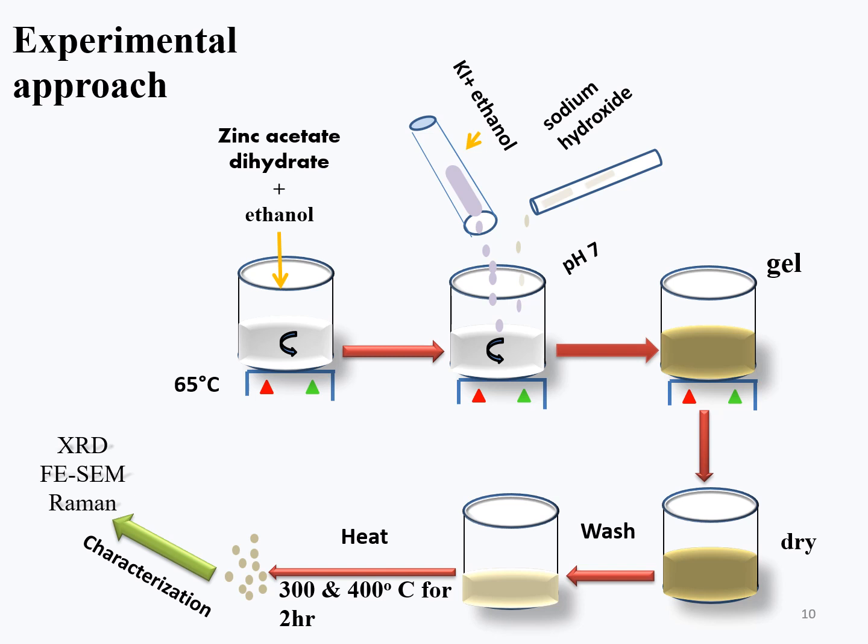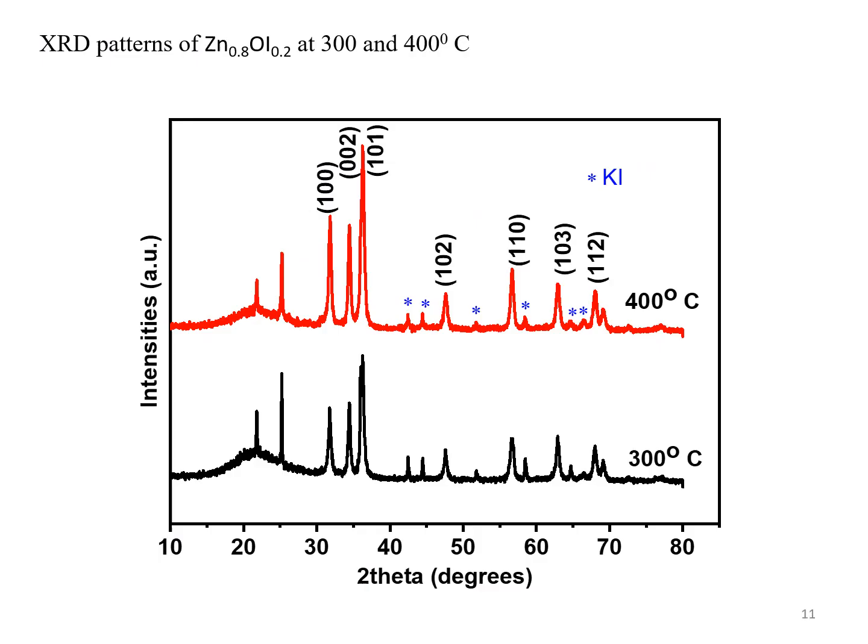The structural and morphological properties of the samples were characterized using XRD diffractometer, field emission scanning electron microscope, and Raman spectroscopy. The structure of samples at 300 and 400 is corresponding to the hexagonal wurtzite structure.